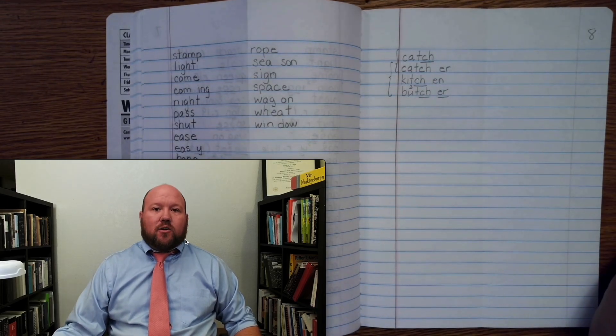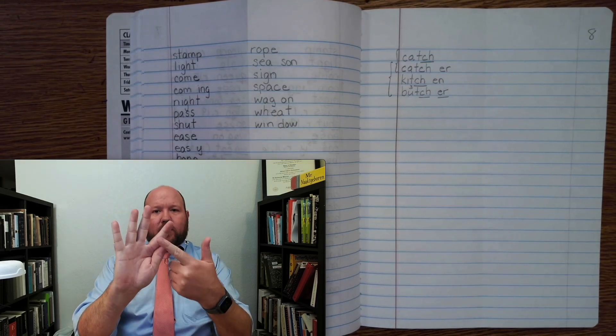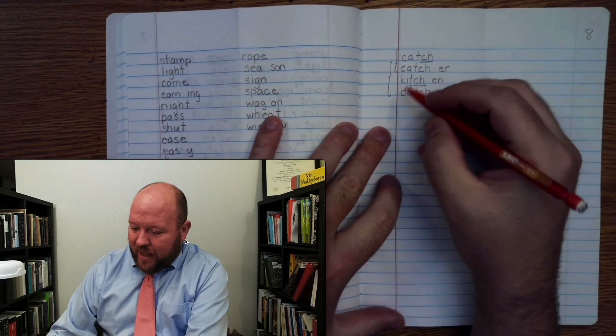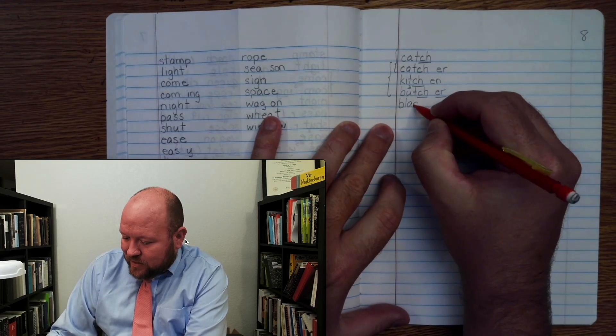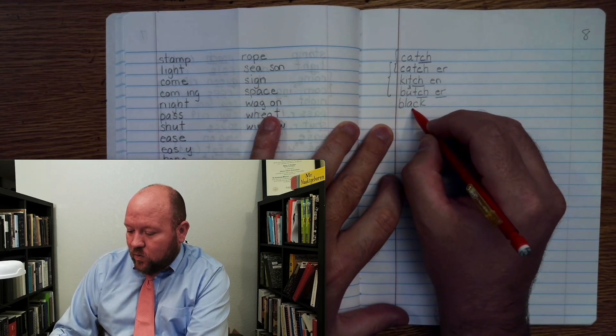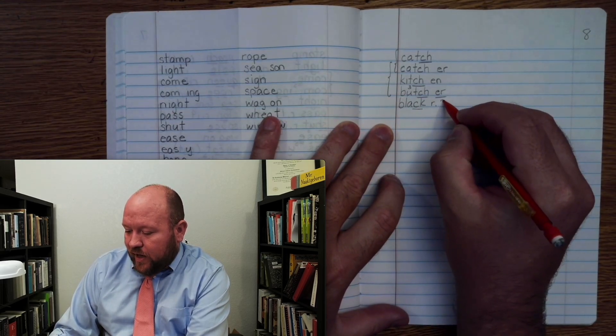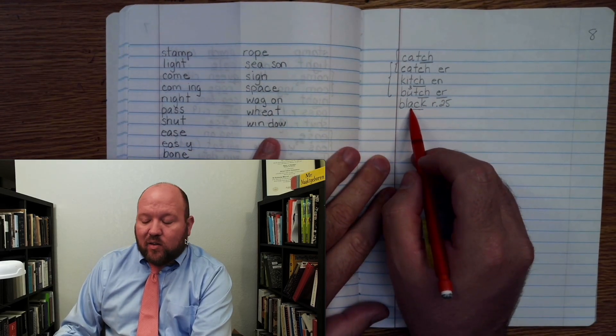Now the next word is the color black. B-L-A-K, black. Here we're going to use a ck. Right? Black. B-L-A-K, black. B-L-A-K once. Rule 25. Rule 25 is I can only use a ck after a single vowel that makes its first sound.